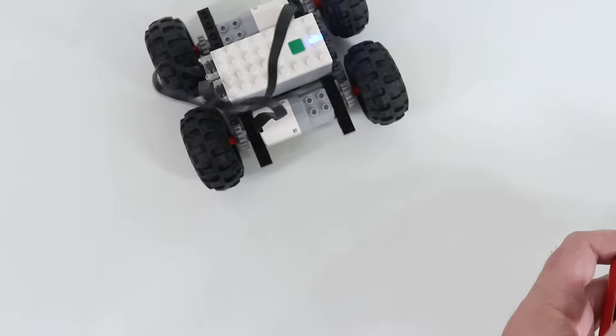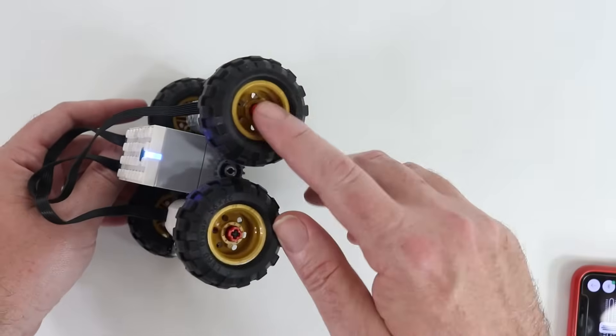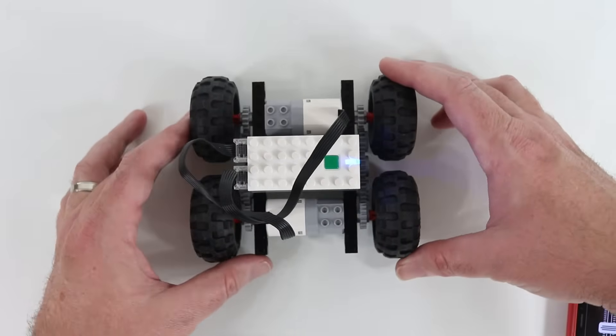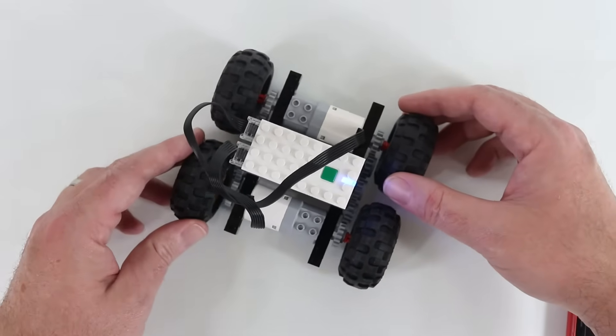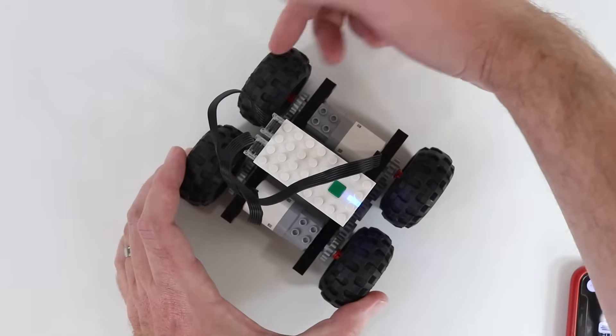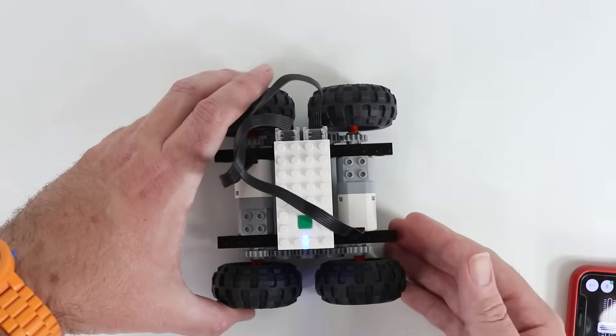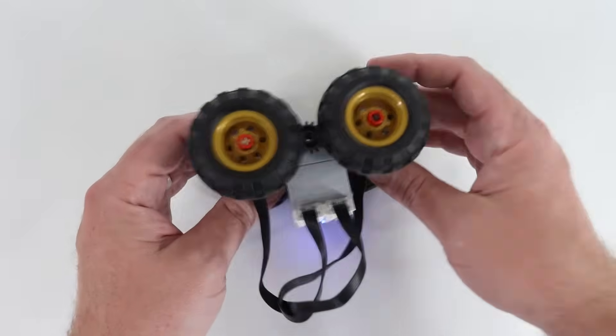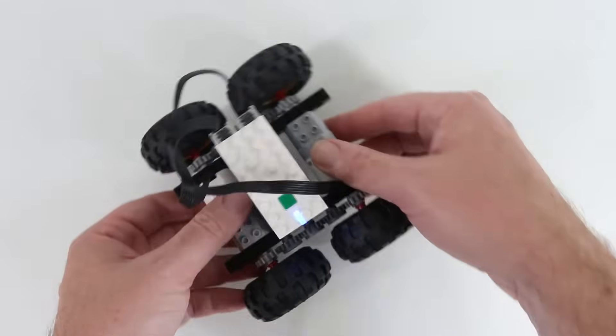But it can steer. That's the importance of these outside bushings. You see as it turns this direction. So if this wheel is turning this direction, it's dragging this front wheel across. And it's going to want to push that wheel off. So that's why that outside bearing is very important.